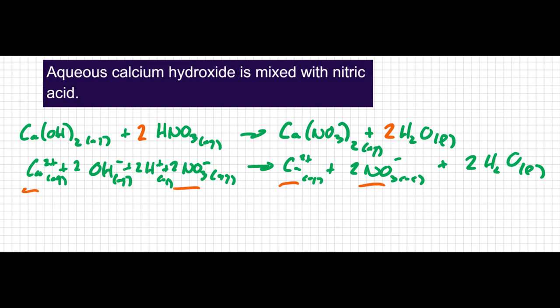The net ionic equation would show everything but the spectator ions. It would show that I have two hydroxide ions that are aqueous combining with two hydrogen ions, which are also aqueous, forming two liquid water molecules. If an acid-base reaction always forms water, the net ionic equation for an acid-base reaction should always show the formation of water. In this case, it shows the formation of two water molecules because there are two water molecules in the balanced equation.